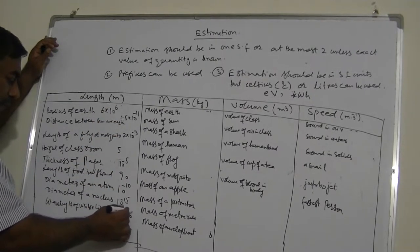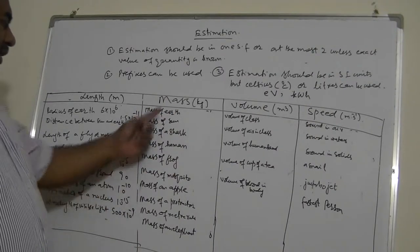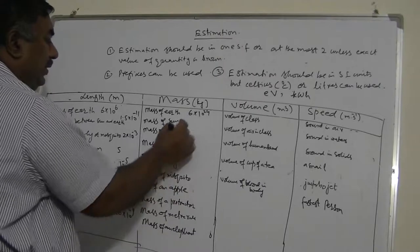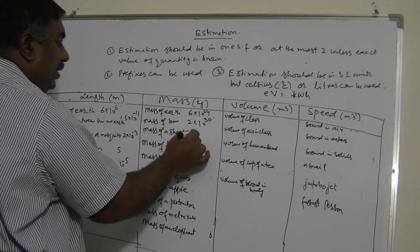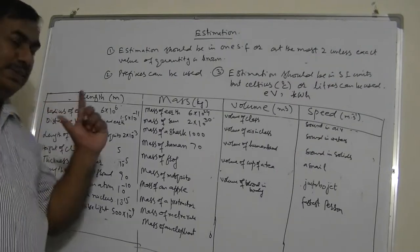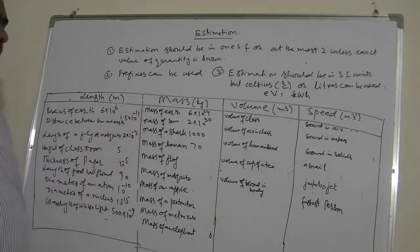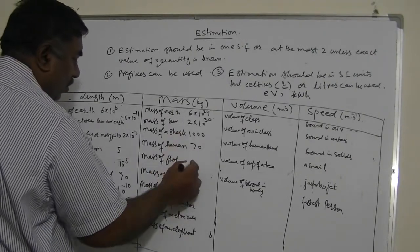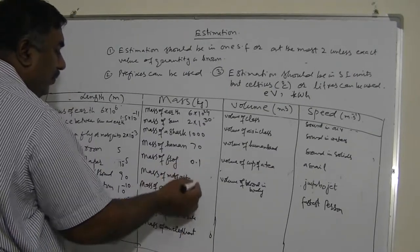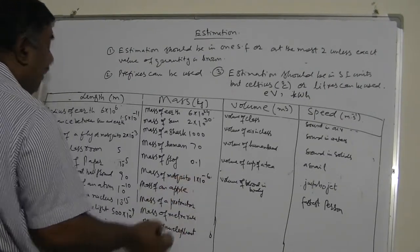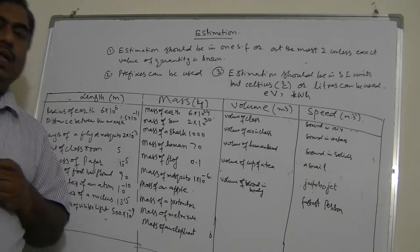Moving on to masses: the mass of Earth is 6 × 10²⁴ kg, and the mass of the Sun is 2 × 10³⁰ kg. The mass of a car is about 1,000 kg. The mass of a human is 70 to 90 kg, but if the examiner asks for the weight of a person, you should write 700 Newtons, not 70. The mass of a frog is about 100 to 200 grams (0.1 kg), and the mass of a mosquito is about 1 milligram, or 1 × 10⁻⁶ kg.